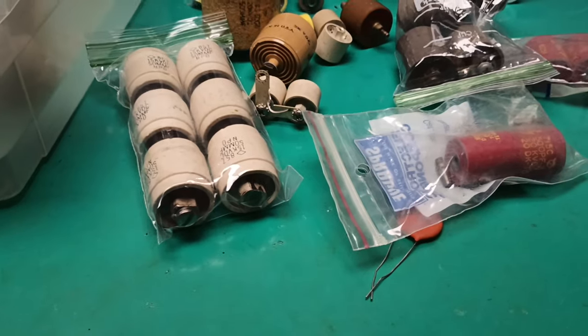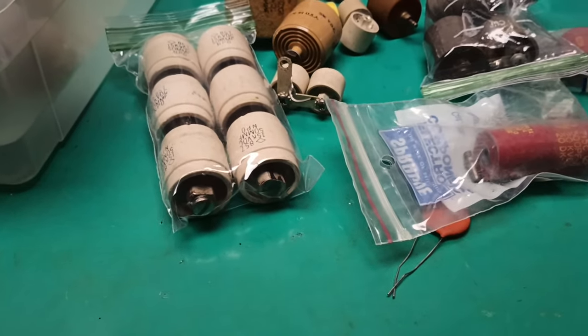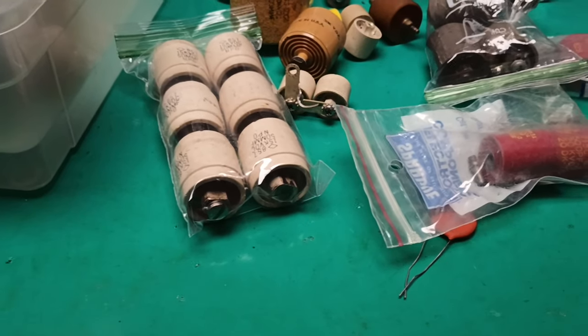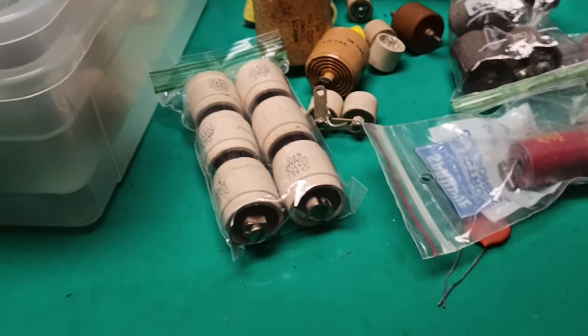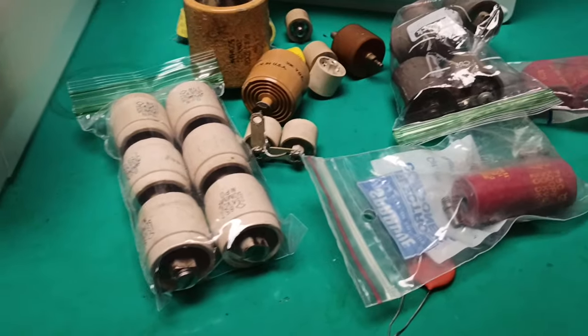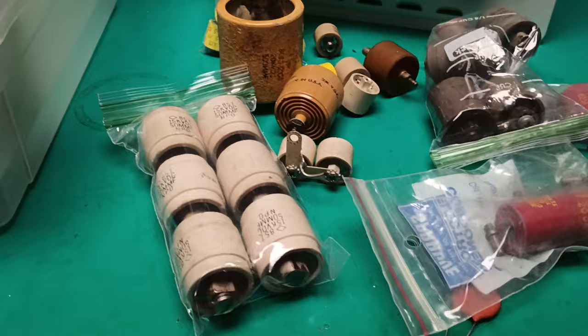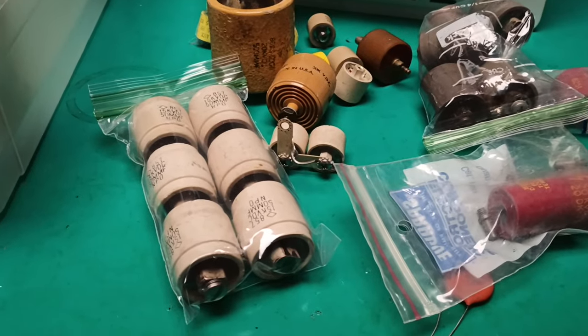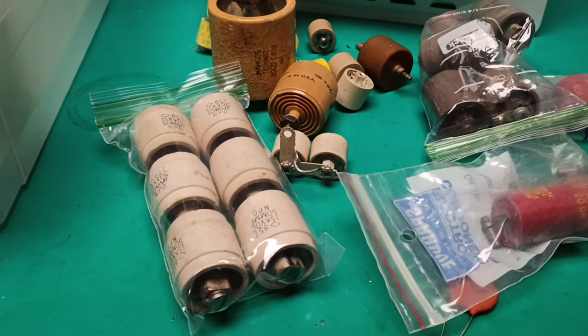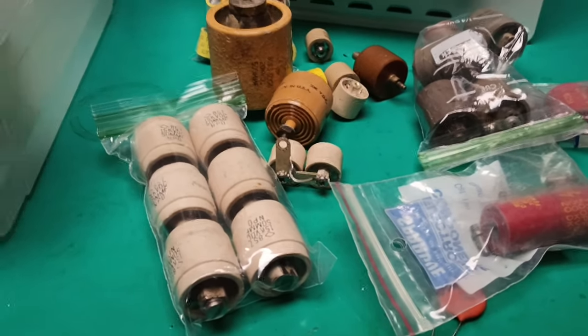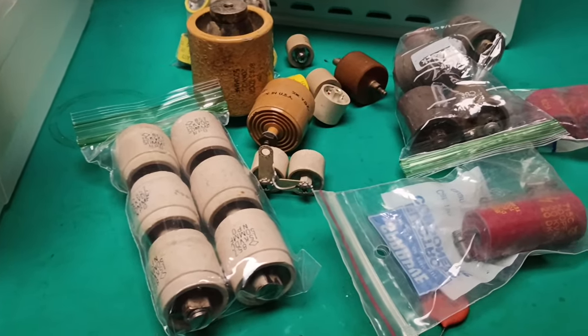K8BYP here with a video on doorknob capacitors. When you're doing what real hams do, taking apart an old RF tube amplifier and rebuilding it, part of that is looking at replacing the doorknob capacitors and finding out how expensive they are. They start at around a hundred bucks a piece. I would not want to try to afford one of those.